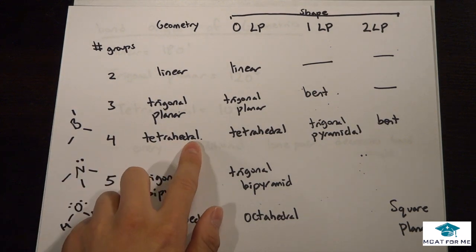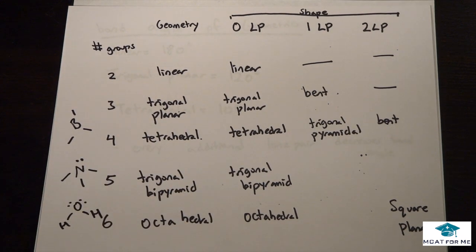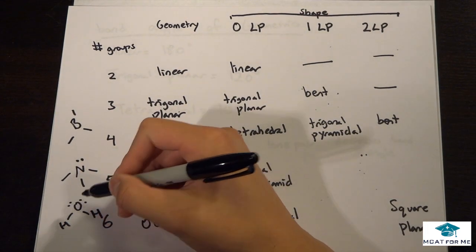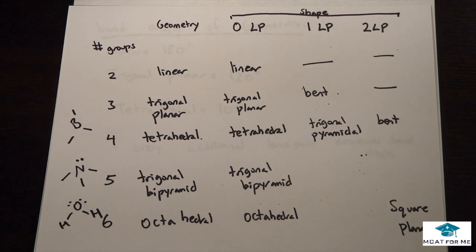So its geometry is tetrahedral, right? But how many lone pairs does it have? Well, it has two - one right here, one right there.